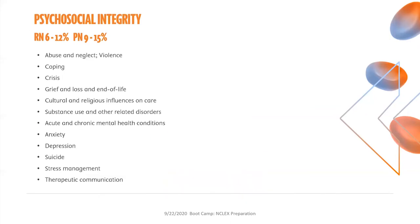The psychosocial integrity category is 6% to 12% for the RN and 9% to 15% for the PN. Content areas include abuse and neglect or violence, crisis, grief and loss and end of life, depression and suicide, among others listed on this slide.